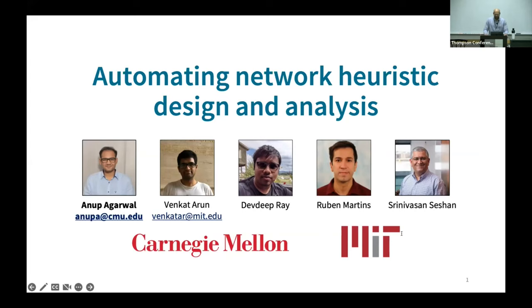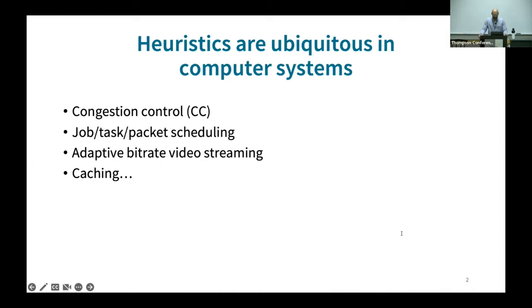This is joint work with collaborators at CMU and MIT. In systems, heuristics are a bread and butter, and they're ubiquitous in systems such as congestion control, scheduling, and video streaming, to name a few.